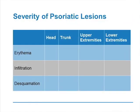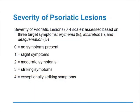The degree of erythema or redness, the degree of infiltration or plaque thickness, and the degree of desquamation or scaling are measured on a zero to four scale. Zero means there's no redness, infiltration, or desquamation. A score of four means it's severe. Three is severe but not very severe, two is moderate, and one is slight. So each of those three target symptoms — erythema, infiltration, and desquamation — are rated on that zero to four scale.